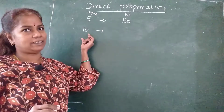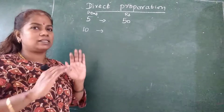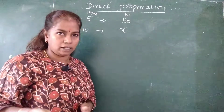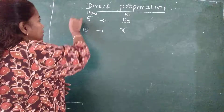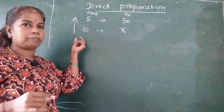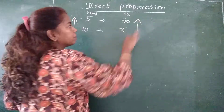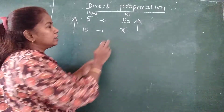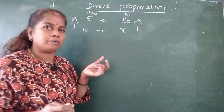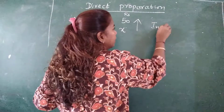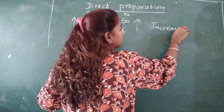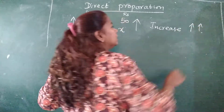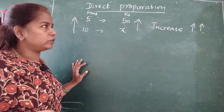Because the quantity is increased — 5 pens increased to 10 — so the price will also get increased. When there is an increase in quantity, there is an increase in price also. So it is a direct proportion. If there is an increase in one, there will be an increase in the other commodity also.